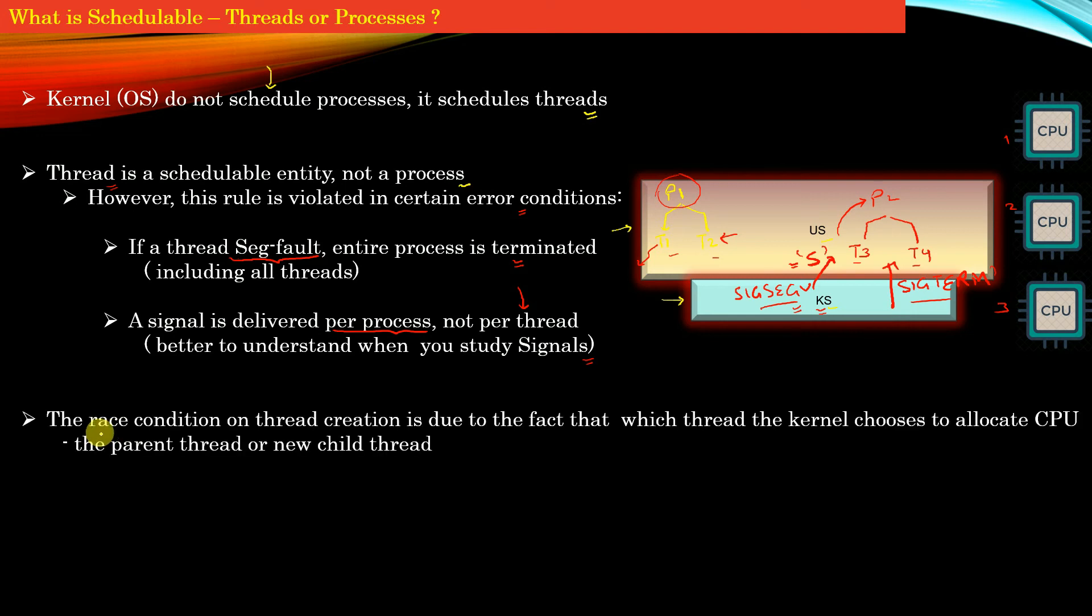Remember that we discussed the race condition created when a new thread is created. The race condition on thread creation is due to the fact that the kernel chooses which thread to allocate CPU - whether it's the parent thread or child thread. Because of this indeterminism, the race condition exists.